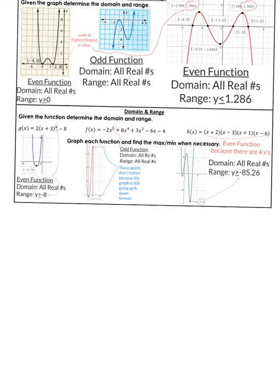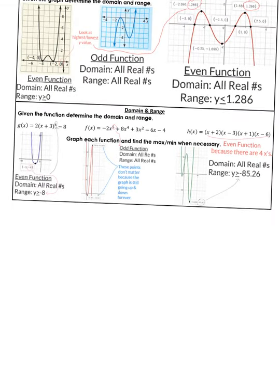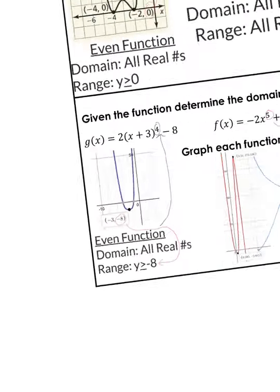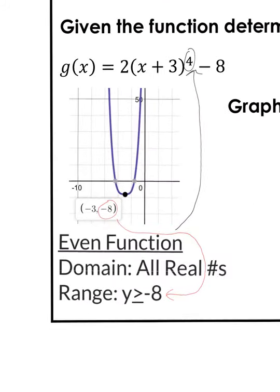The thing I do next is what if I give you a function. Given the function, determine the domain and range. So I recommend you graph each function and find the min and max, and then I wrote when necessary. Because if it's an odd function then you don't need to graph it. You can just default go straight to saying domain is all real numbers, range is all real numbers. But on these three examples I did graph them. I graphed them anyway, whether I needed to or not.